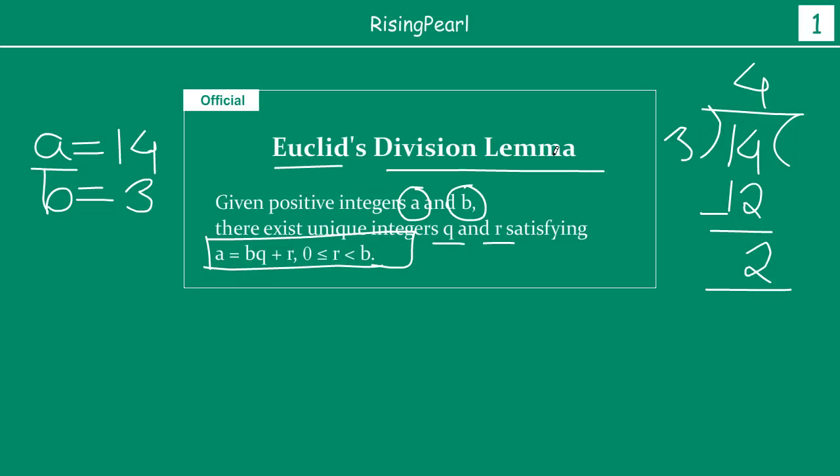So Euclid's division lemma is saying basically this number 14 can be written as b which is your divisor multiply by your quotient plus your remainder. So in other words, 14 equals 3 times 4 plus 2. So we started out with two numbers 14 and 3 and we found that there exist these other two numbers 4 and 2 that satisfy this equation.